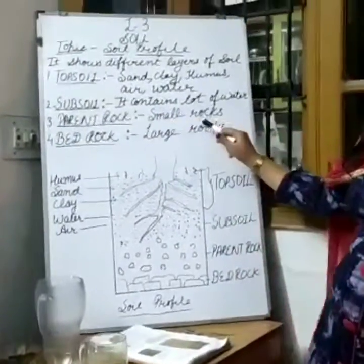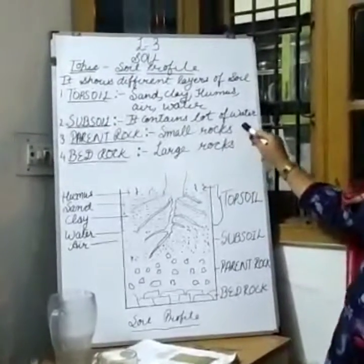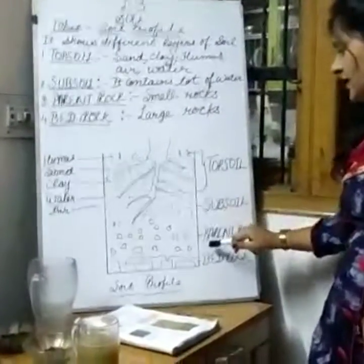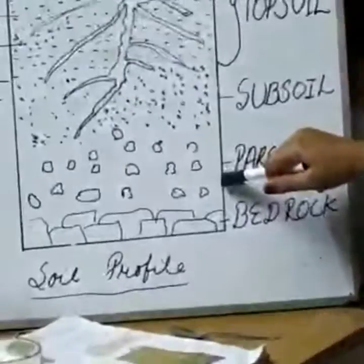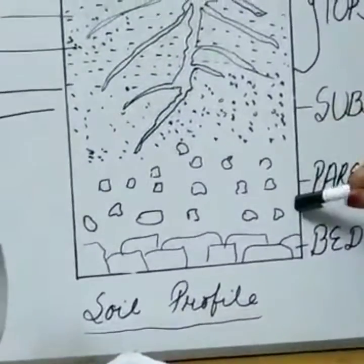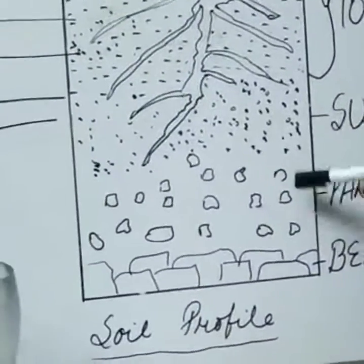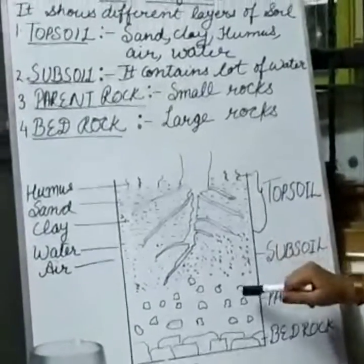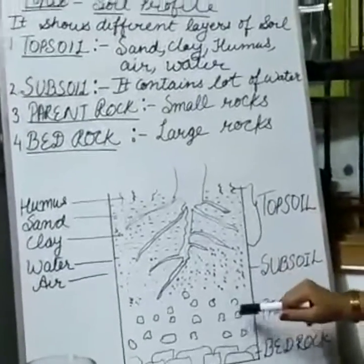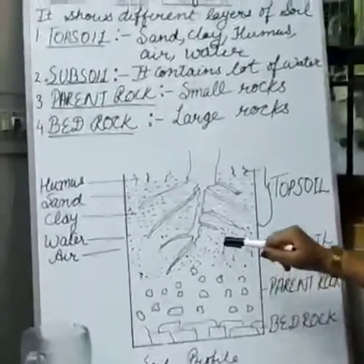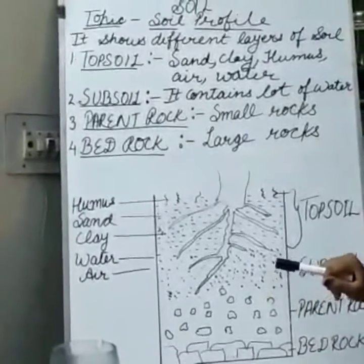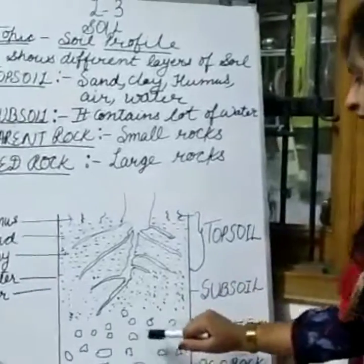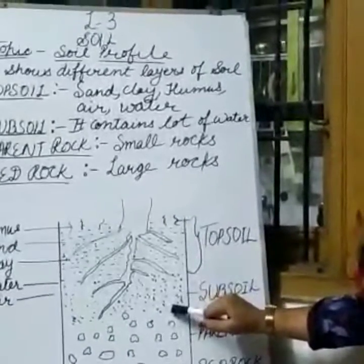The next layer of soil is parent rock. Parent rock contains small rocks. See in this diagram — small rocks are there. These rocks decide the quality and texture of the soil. Soil is made up of this parent rock. Parent rock decides the texture of the soil.